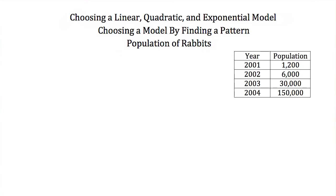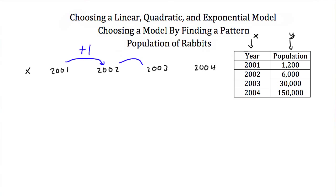Let's look at one more model — the population of rabbits. We'll choose this model by finding a pattern. We're given several years as our x values, and rabbit populations as our y values. The years are 2001, 2002, 2003, and 2004. The populations are 1,200, 6,000, 30,000, and 150,000.